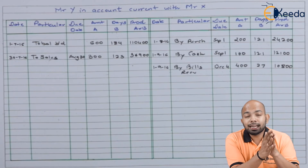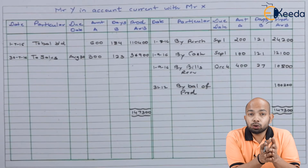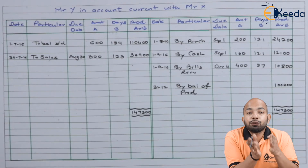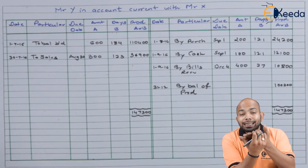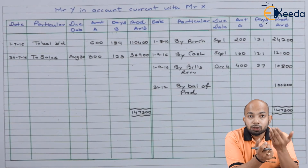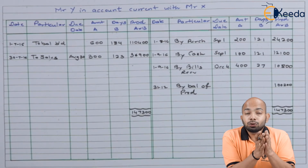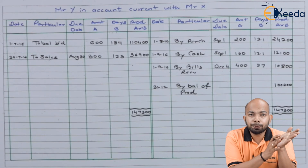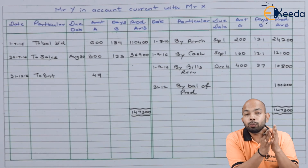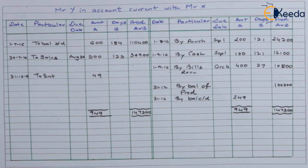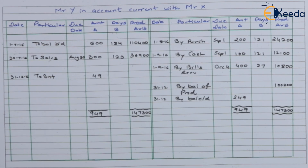We follow the same concept of product balances — calculate the product total first and figure out where the balance lies. The balance of the product has been found: the debit side is more than the credit side, giving a product balance of 1,00,200. On this amount we calculate interest at 18% per annum for one day, which comes to Rs. 49.41, rounded off to Rs. 49. The interest is entered on the debit side since the product balance is on the credit side. The final balance of the amount column is also Rs. 249, with the debit side exceeding the credit side, so the balance is mentioned on the credit side and carried forward to the next year.